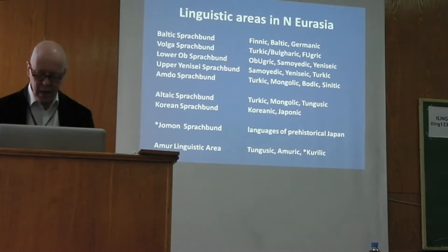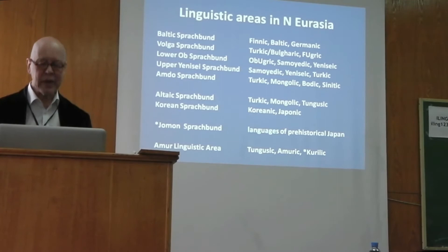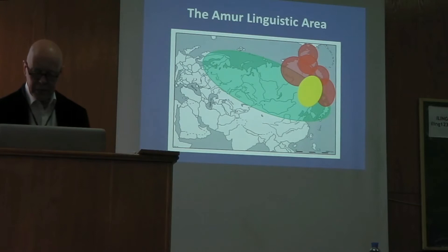We have three language families in this region: the Tungusic family, the Amuric family or Nivkh language, and the Kurilic or Ainu language family. This is the region we are talking about, marked in yellow. It is basically the lower Amur Basin, but also comprises some parts of the Sungari River, which flows into the Amur.